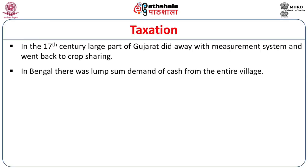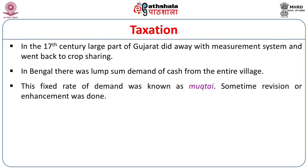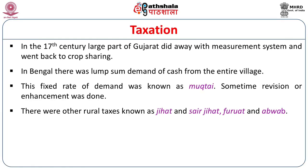In Bengal, there was a lump sum demand of cash from the entire village. This fixed rate of demand was known as muktai. Revision or enhancement was also done and reported in the rule book. There were other rural taxes known as jihad, seri jihad, furwat, and abwab. So it was not only the tax on crops that was levied, but there were other rural taxes which the peasants had to pay.